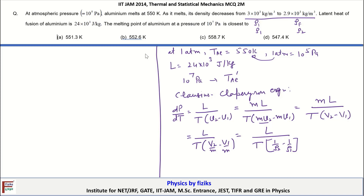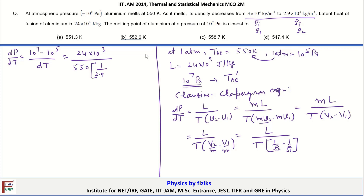Substituting values: ΔP/ΔT = (10⁷ − 10⁵) / (T_final − 550) = 24 × 10³ / 550 × (1/2.9 × 10³ − 1/3 × 10³). After solving the numerator, 99 × 10⁵ / ΔT equals 24 × 10⁶ / (3 × 2.9 × 550 × 0.1).